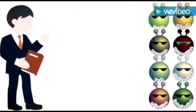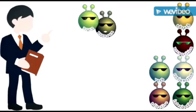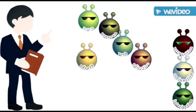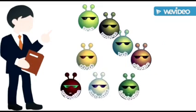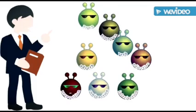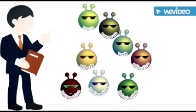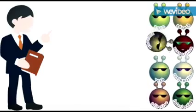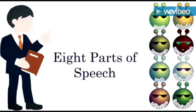Hey, who are you? We are parts of speech! I'm Noun, I'm Pronoun, I'm Verb, I'm Adjective, I'm Adverb, I'm Preposition, I'm Conjunction, I'm Interjection. Okay, so you're the parts of speech — Noun, Pronoun, Verb, Adjective, Adverb, Preposition, Conjunction, and Interjection. Let me count: one, two, three, four, five, six, seven, eight. There are eight parts of speech.